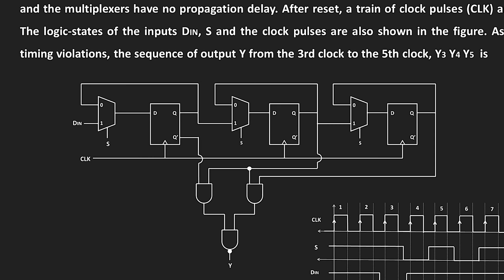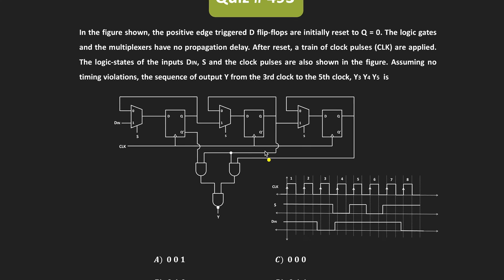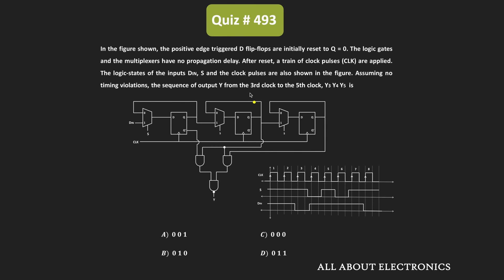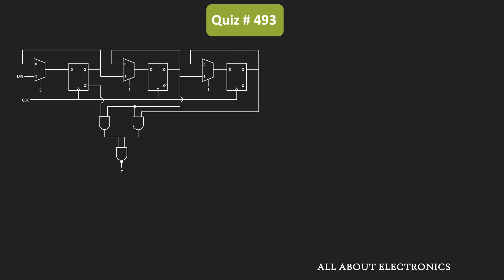This clock signal is applied to the positive edge-triggered D flip-flops. Here, we have been asked to find the sequence of the output Y during this time. Through the multiplexers, the inputs are applied to the D flip-flop. S is the selection input for all the multiplexers, while DIN is the input for the first multiplexer. Whenever S is equal to 0, the 0 number input will get selected, and whenever S is equal to 1, the 1 number input will be available at the output side.